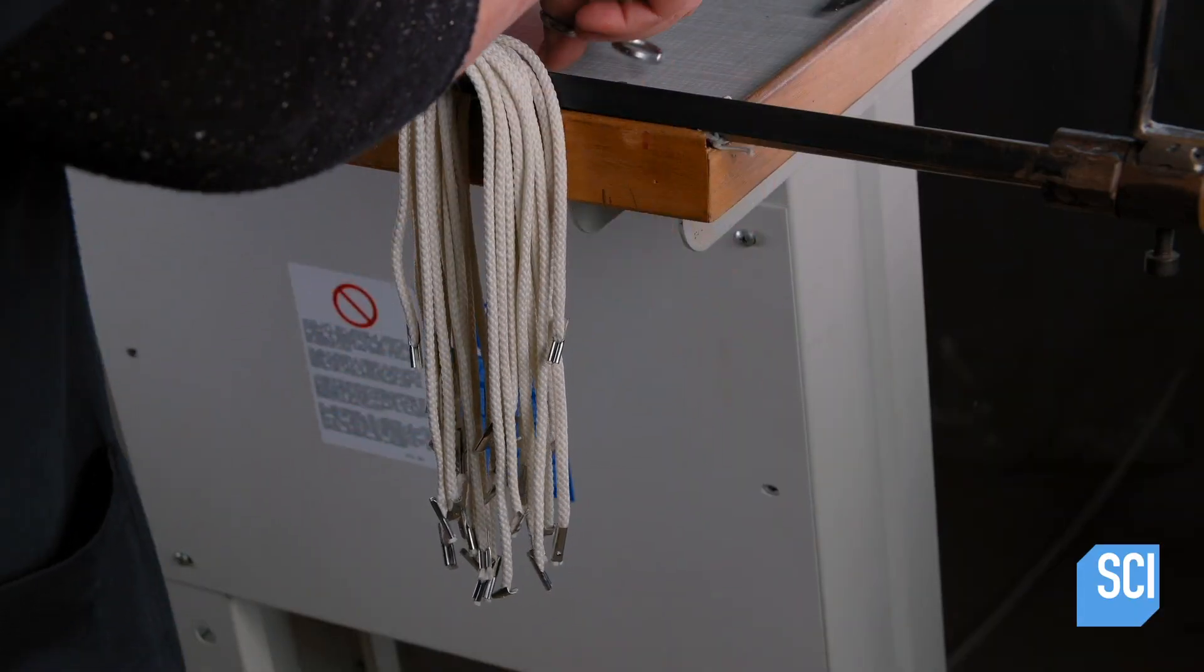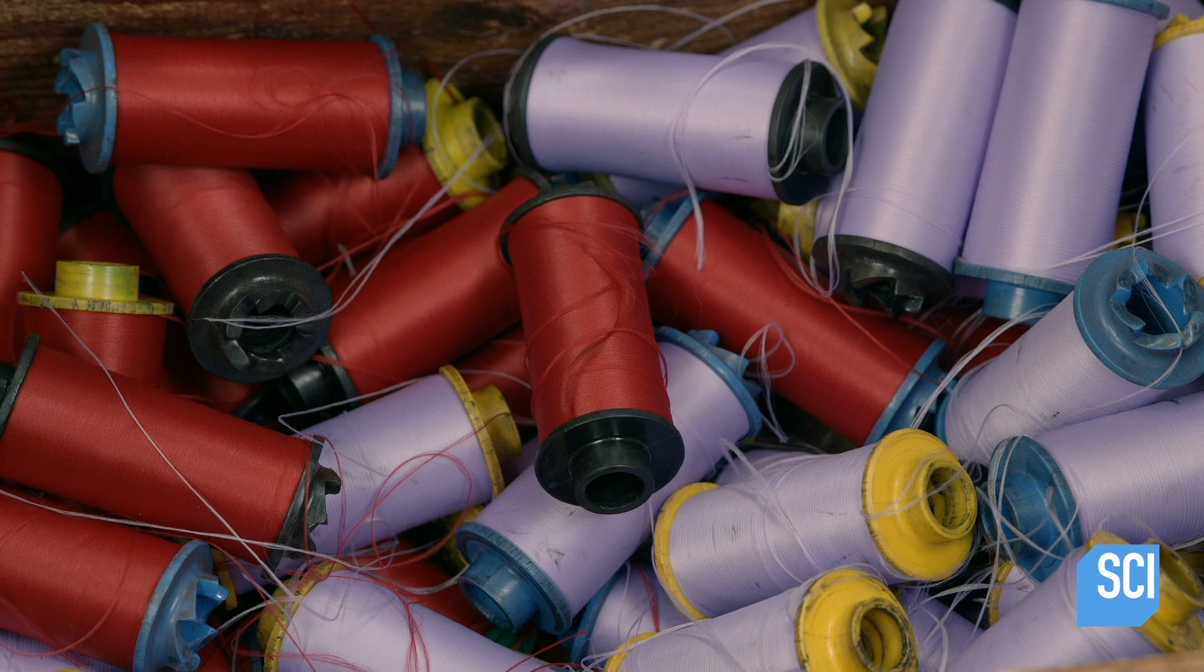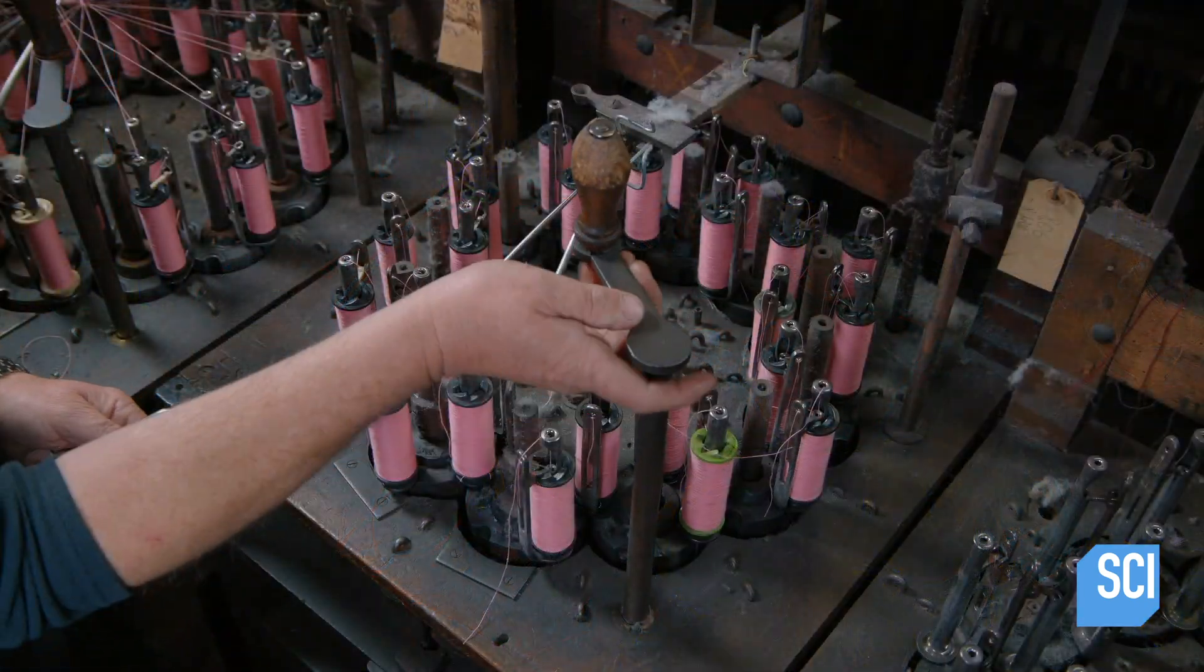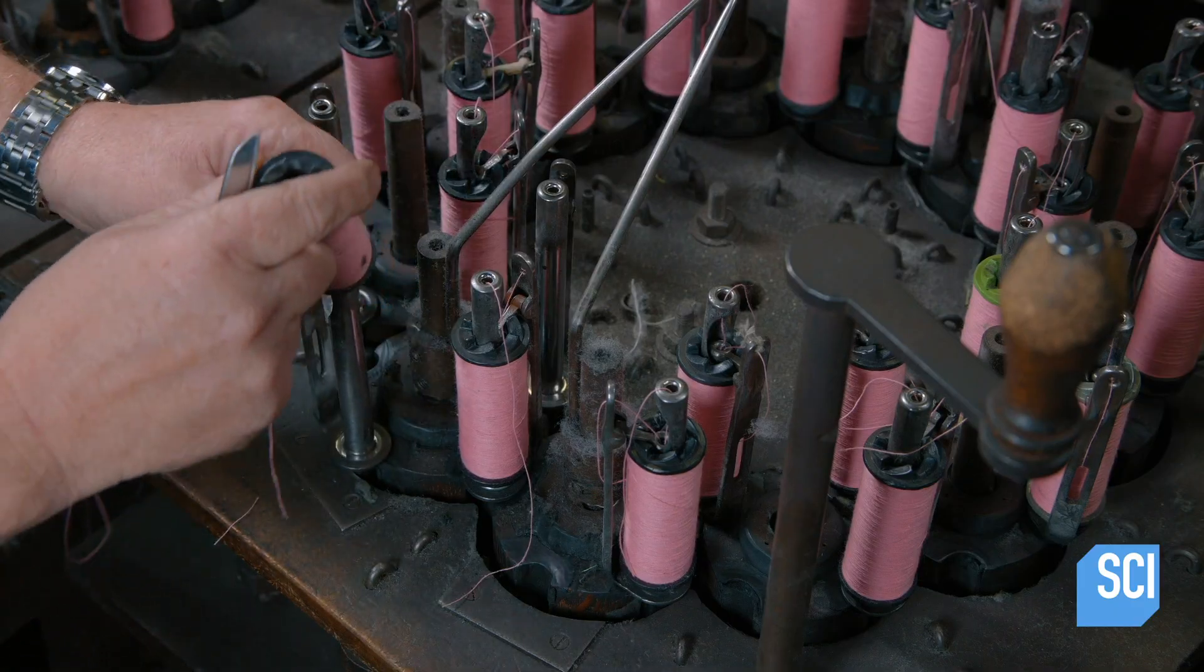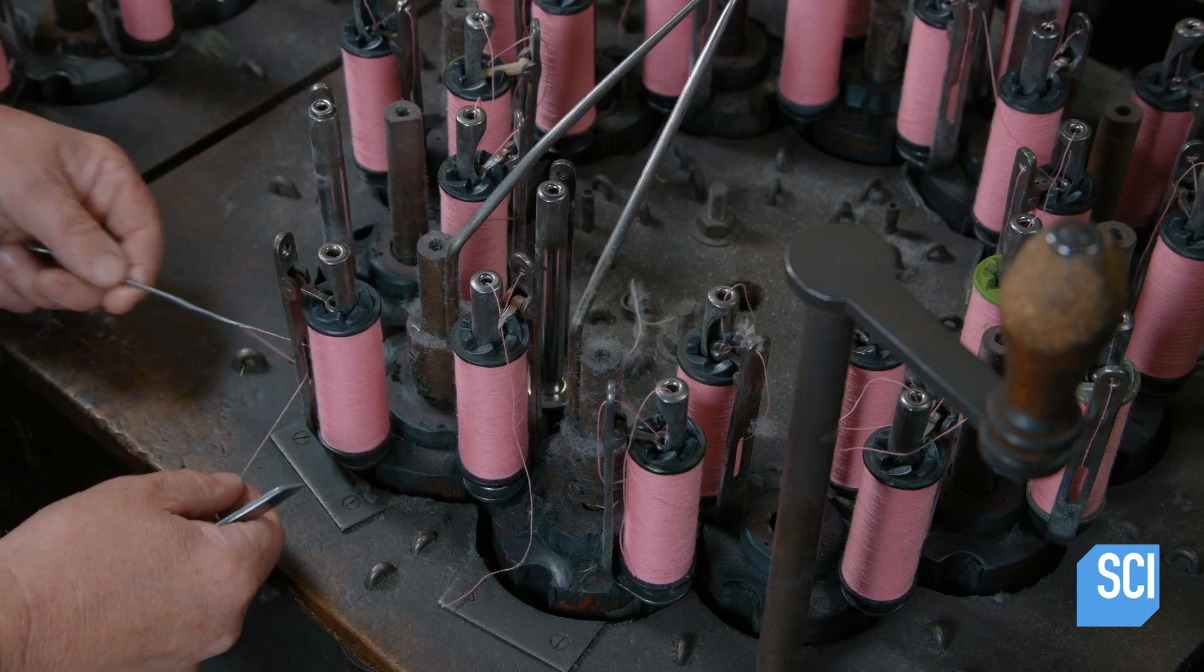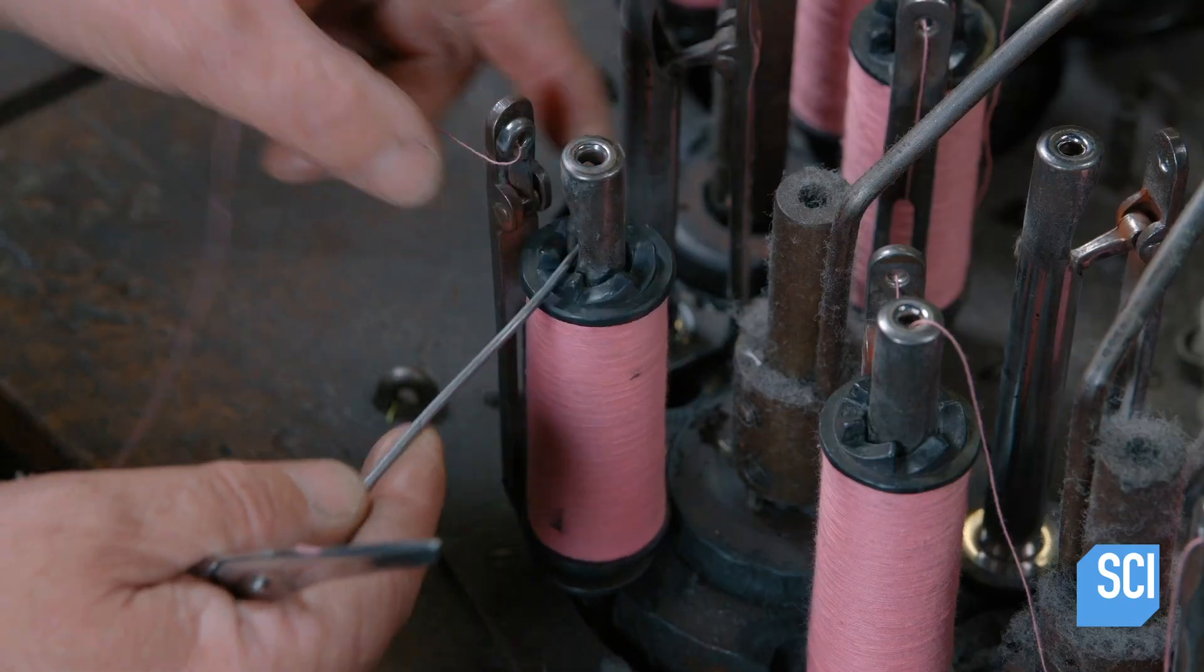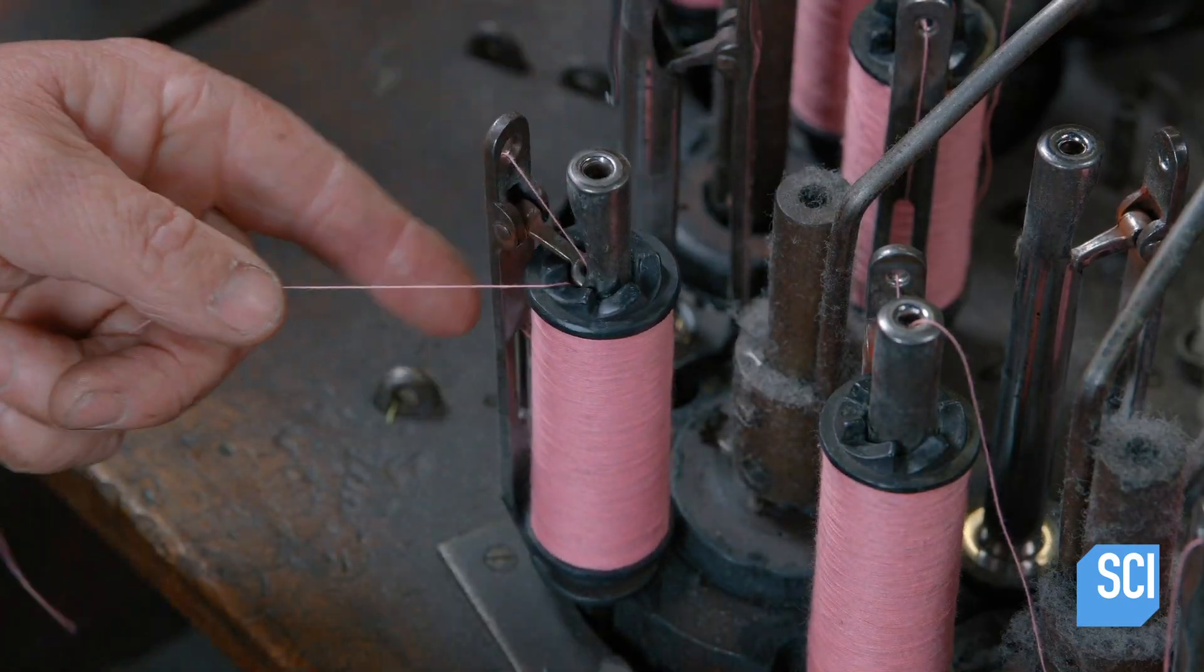This factory also makes rick rack, a flat zigzag trim that's sewn onto clothing. These rick rack braiding machines are 120 years old. Each one holds from 13 to 73 bobbins of thread. The more bobbins used, the wider the rick rack.